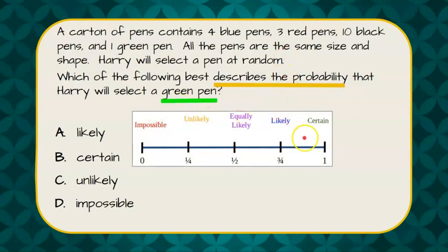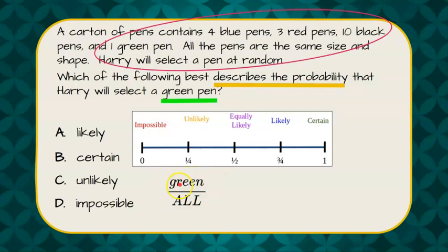So here is our gauge on how we describe probability from impossible to certain. And we need to use the number of pens we have first, because we want to know green from all of the pens.